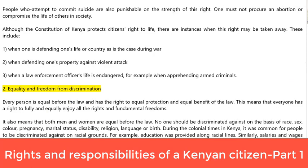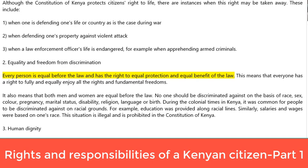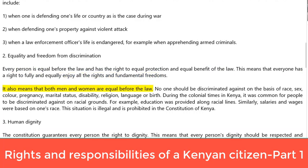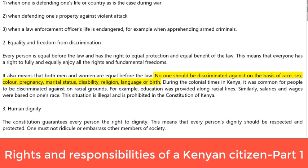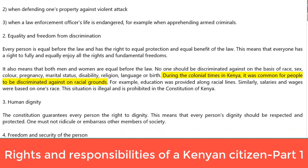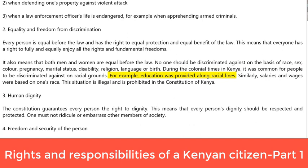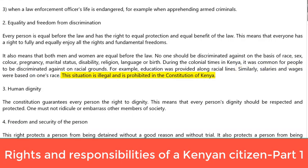2. Equality and freedom from discrimination. Every person is equal before the law and has the right to equal protection and equal benefit of the law. This means that everyone has a right to fully and equally enjoy all the rights and fundamental freedoms, and that both men and women are equal before the law. No one should be discriminated against on the basis of race, sex, colour, pregnancy, marital status, disability, religion, language, or birth. During the colonial times in Kenya, it was common for people to be discriminated against on racial grounds — for example, education was provided along racial lines and salaries and wages were based on one's race. This situation is illegal and is prohibited in the Constitution of Kenya.